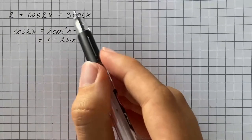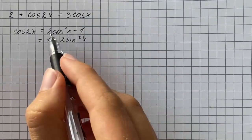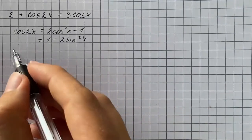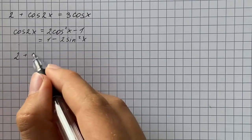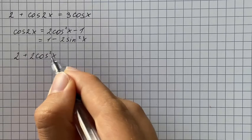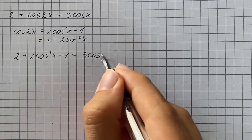As the right term involves cosine of x, I'm going to use the first identity, which is 2 cosine squared of x minus 1. So we rewrite cosine of 2x as 2 cosine squared of x minus 1 and equals 3 cosine of x.